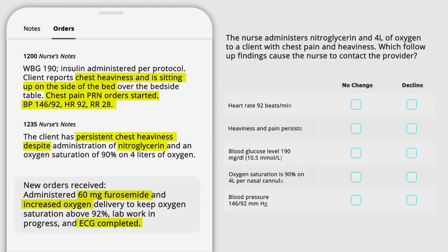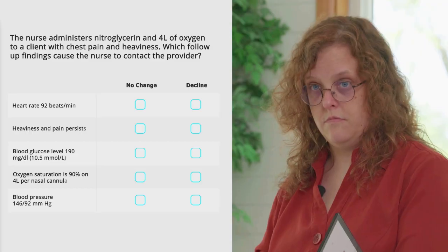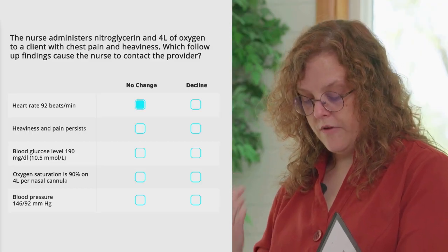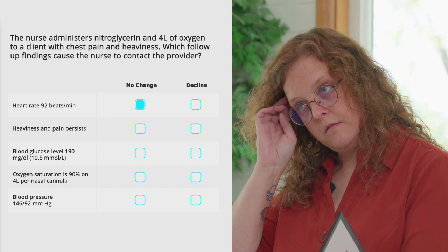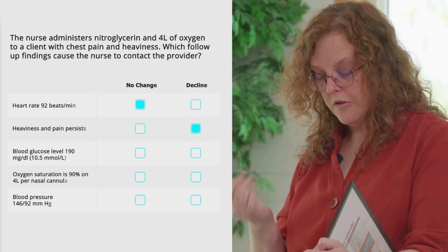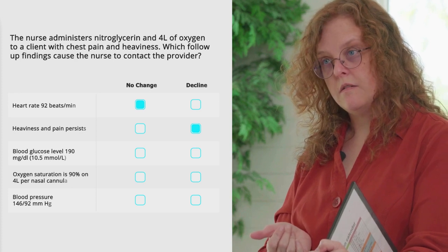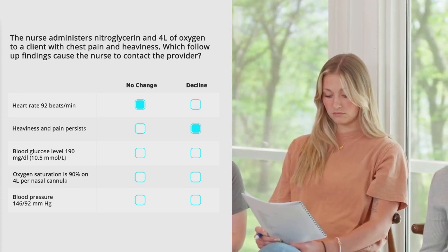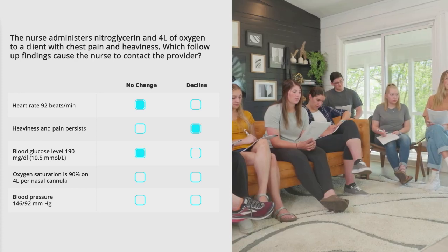The question is: the nurse administers nitroglycerin and four liters of oxygen to a client with chest pain and heaviness — which follow-up findings cause the nurse to contact the provider? This is the part where you're evaluating the interventions you've done to see if they were effective. Heart rate of 92 beats per minute — better or worse? The heaviness and pain persists — it's worse. The glucose level of 190 is totally irrelevant.